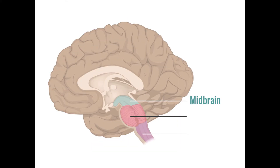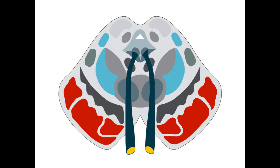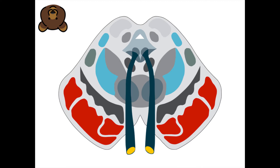We'll now dive into each of the three parts of the brainstem in more detail, starting with the midbrain. Let's look at the midbrain as if we took a knife and sliced through it from side to side. This produces a cross section that kind of looks like a teddy bear's face, and we can use this resemblance to describe the relevant neuroanatomy.